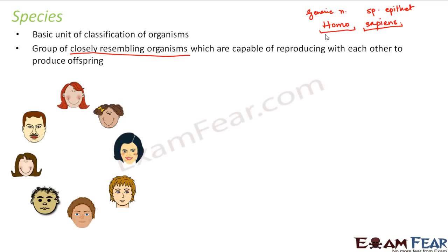All human beings, irrespective of how they look, share a lot of similarities. Some might have curly hair, some straight hair, some black hair, some brown eyes — those differences exist. So it is not said that all organisms of a species will be exactly similar; they will resemble very closely. Each human being has a similar basic structure — two eyes, one nose, one mouth, two hands. They have small differences but all human beings belong to the same species, Homo sapiens.